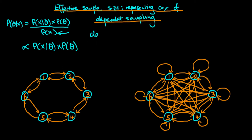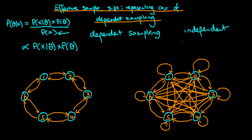Dependent sampling is a sampling routine where the next value we obtain from our sampler depends on our current value. That contrasts with the case of an independent sampler, where the next value we sample from our distribution does not depend on our current value.